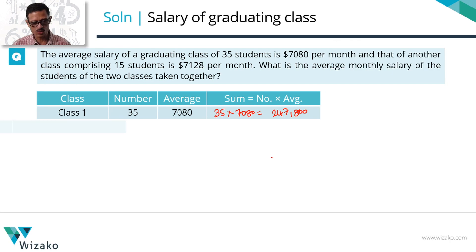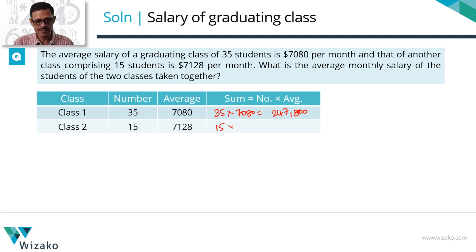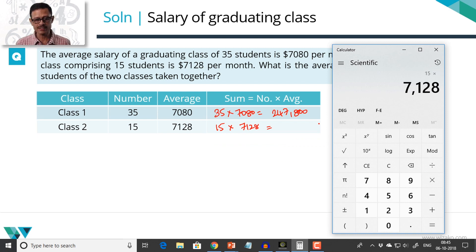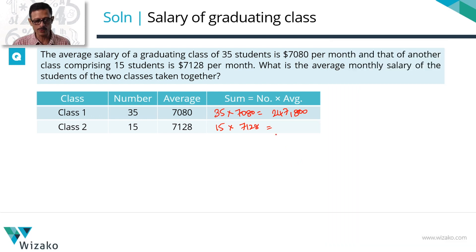Let's move on to class 2. Class 2 has 15 students. Their average salary is equal to 7128, so this is 15 × 7128. Slightly more difficult calculation, but with a calculator all are one and the same: 15 × 7128 works out to 106,920.